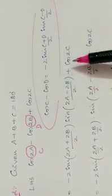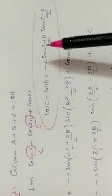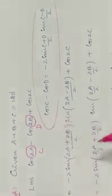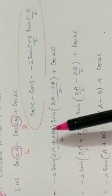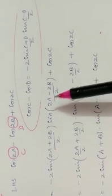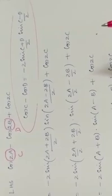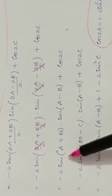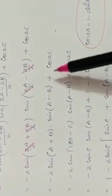The third part remains the same: cos2C. In the place of C write 2A, and in the place of D write 2B. Next, split the 2 to the numerator: -2·sin(A+B)·sin(A-B) + cos2C. After cancellation, the remaining is -2·sin(A+B)·sin(A-B) + cos2C.